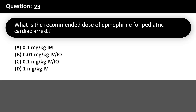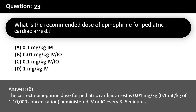What is the recommended dose of epinephrine for pediatric cardiac arrest? A. 0.1 mg/kg IM. B. 0.01 mg/kg IV/IO. C. 0.1 mg/kg IV/IO. D. 1 mg/kg IV/IO. Answer: B. The correct epinephrine dose for pediatric cardiac arrest is 0.01 mg/kg (0.1 ml/kg of 1:10,000 concentration), administered IV/IO every 3–5 minutes.